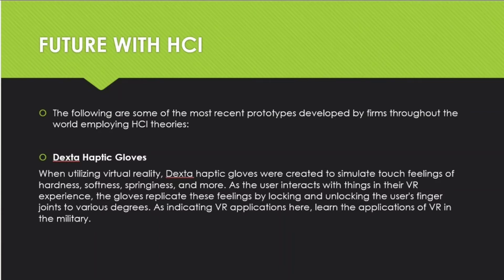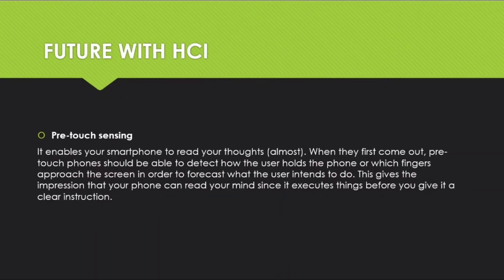Another future HCI example is pre-touch sensing. It enables your smartphone to read your intentions almost before they form. Pre-touch phones should be able to detect how the user holds the phone and which finger approaches the screen, in order to forecast what the user intends to do. This gives the impression that your phone can read your mind, since it executes actions before you give it a clear instruction.